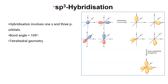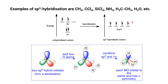SP3 hybridization involves one s orbital and all three p orbitals. When hybridization takes place, the shape of the hybridized orbitals leads to tetrahedral geometry with a bond angle of 109.5 degrees. Examples include methane, CCl4, SiCl4, ammonia, ethane, and water. For carbon with configuration 2s2, 2p2, after sp3 hybridization all four sp3 hybridized orbitals combine with the 1s orbital of hydrogen, giving rise to methane.